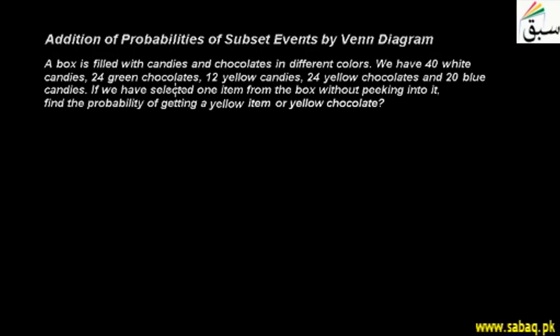We have 40 white candies, 24 green chocolates, 12 yellow candies, 24 yellow chocolates, and 20 blue candies. If we have selected one item from the box without peeking into it, find the probability of getting a yellow item or yellow chocolate.